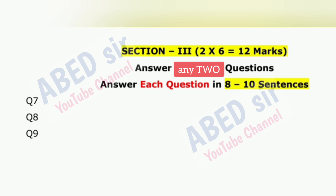Session 3 is 12 marks, Session 2 is 12 marks, and Session 1 is 6 marks. Total 30 marks for Part A.